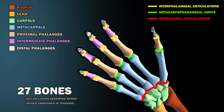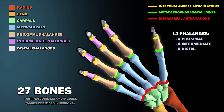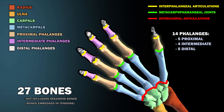Let's start with the phalanges, which are the bones of your fingers. There are 14, and these can be divided into the distal, intermediate, and proximal phalanges. The distal ones are the most distant from your body's core, while the proximal ones are the closest to your palm.